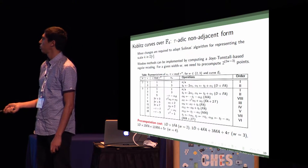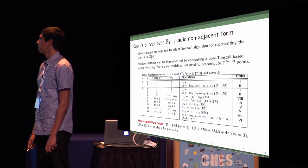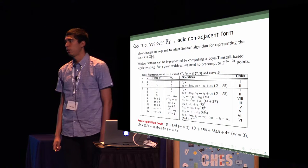For width 4, we have one doubling, twenty full additions, eleven mixed additions, and five tau. So we need to be careful when you choose the width.